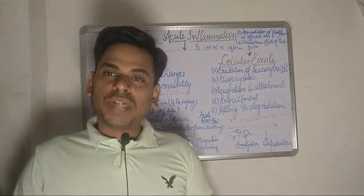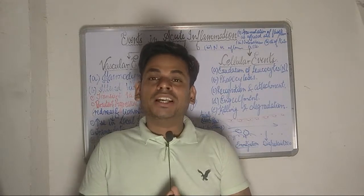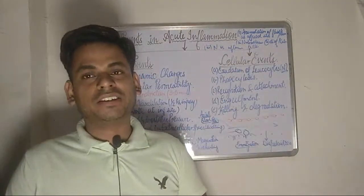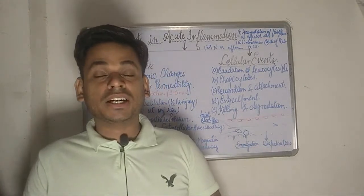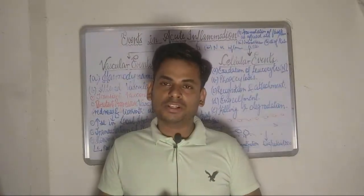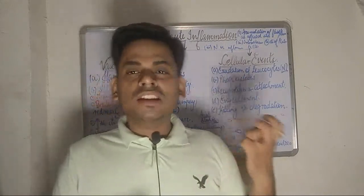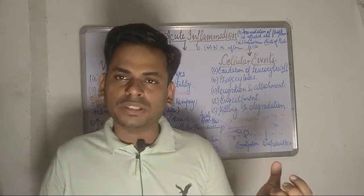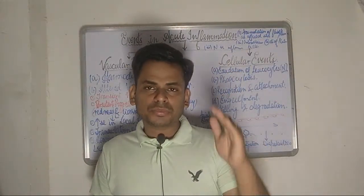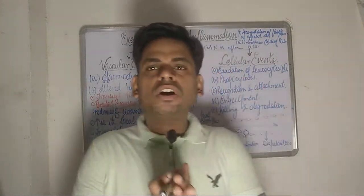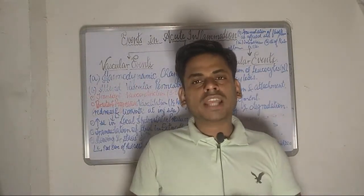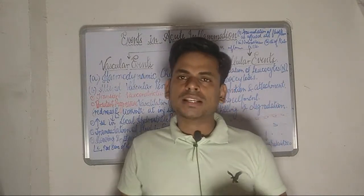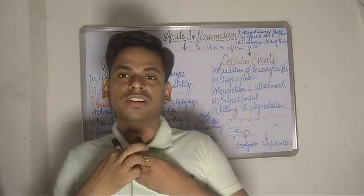Welcome to this biology lecture discussion series. Today's topic is acute inflammation and the events seen during it. Before getting into the detailed discussion, a one-line definition: inflammation is defined as a local response of a living mammalian tissue to inhibit or limit the spread of noxious stimuli, followed by the removal of necrotic cells. The process of inflammation can be broadly subdivided into two groups: acute inflammation and chronic inflammation.